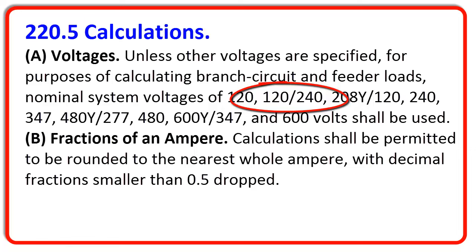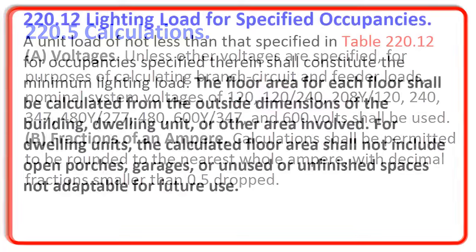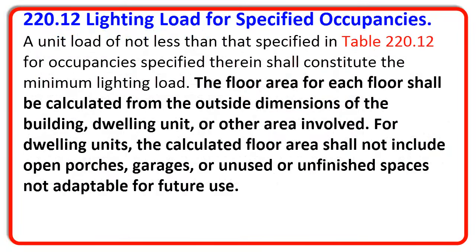So what do we use to figure our calculations with? We need to figure our lighting load for our dwelling unit. And in 220.12, it lets us know that the floor area for each floor shall be calculated from the outside dimensions of the dwelling unit. And specifically for dwelling units, when we calculate the floor area, it will not include open porches, garages, or unused or unfinished spaces that are not adaptable for future use.